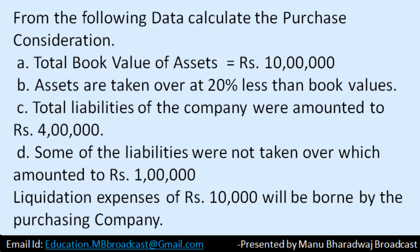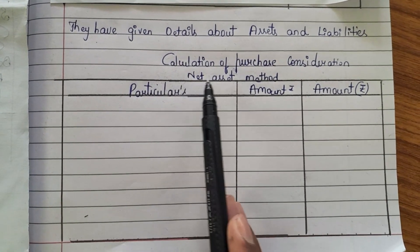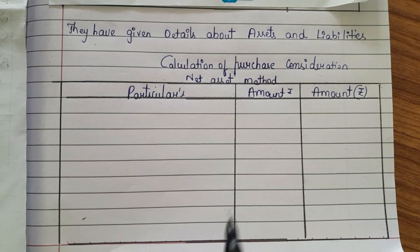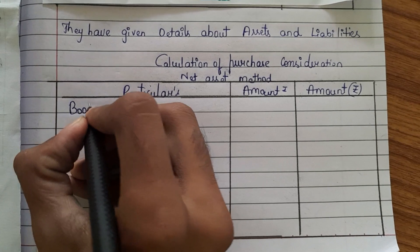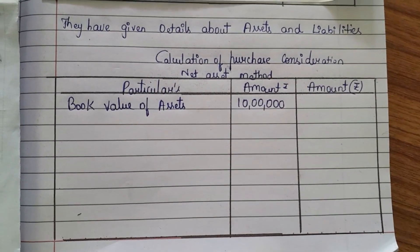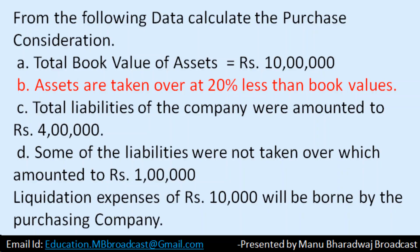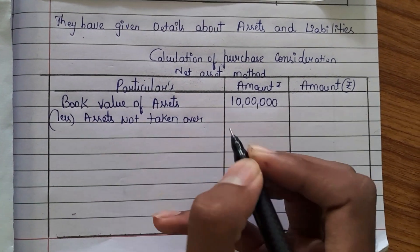In this problem, details about assets as well as liabilities have been given, so we need to use the net asset method to calculate purchase consideration. Total book value of assets is rupees 10 lakh. Assets are taken over at 20% less than book value. So 20% of 10 lakh means 2 lakh worth of assets are not taken over.